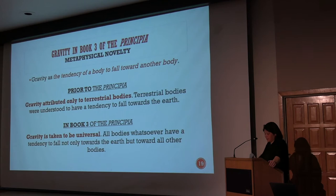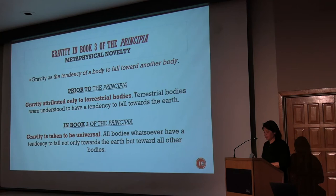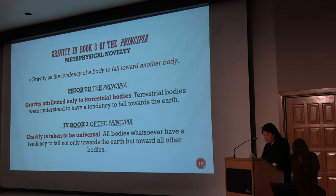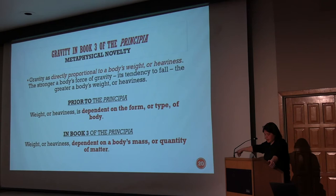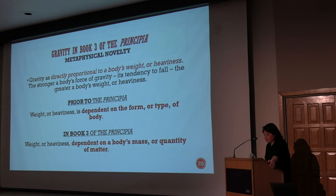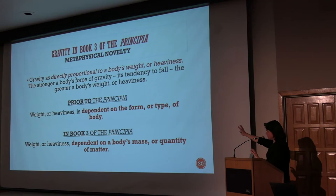Gravity, even before Newton, was the tendency of a body to fall towards another body. But before Newton, the scope was much narrower than in the Principia. Before Newton, gravity was attributed only to terrestrial bodies — they were understood to have a tendency to fall towards the Earth. But in the Principia, gravity is taken to be universal: all bodies whatsoever have a tendency to fall not only towards the Earth but toward all other bodies. Before Newton, it was also understood that gravity is directly proportional to a body's weight or heaviness. Newton rejects the form-based account of weight explicitly right before he applies Rule 3 in Book 3.